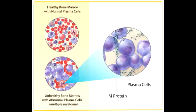The mnemonic to help you remember all the consequences of Multiple Myeloma is CRAB. C is for hypercalcemia, due to destructive bone lesions. R is for renal insufficiency, because Bence Jones proteins — immunoglobulin light chains — appear in the urine. A is for anemia, because bone marrow is replaced with tumor cells. B is for bone lytic lesions and back pain, because the bone is affected, leading to lytic lesions and back pain.